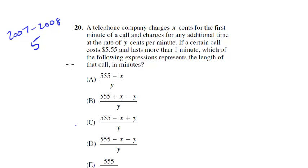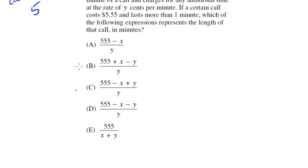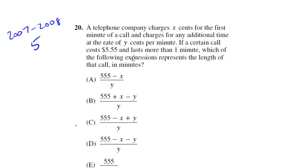Let's look at this last one, number 20, so one of the hardest ones in the section. A telephone company charges X cents for the first minute of a call and charges for any additional time at the rate of Y cents per minute. If a certain call costs $5.55 and lasts more than one minute, which of the following expressions represents the length of that call in minutes? All right, so, rough kind of problem here. Notice the call costs $5.55, lasts more than a minute, and we have some costs here. So let's go ahead, we got variables in the answer choices, let's go plug in. Again, let's use some easy numbers.